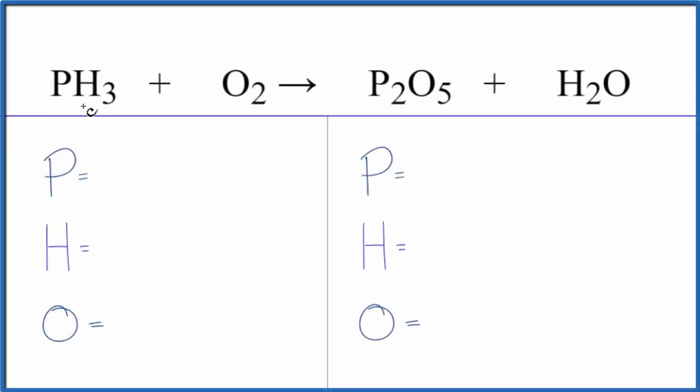So to balance this equation we have PH₃ plus O₂. Let's first count up the atoms for each substance here. So we have one phosphorus, three hydrogen, two oxygens.